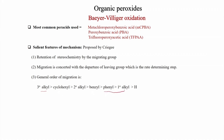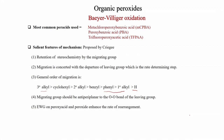Phenyl migrates more than primary alkyl, and lastly hydrogen. The migrating group should be anti-periplanar to the O–O bond of the leaving group — this is also important. The migrating group and the O–O bond of the leaving group must be anti-periplanar. Electron-withdrawing groups on the peroxy acid enhance the rate of rearrangement.